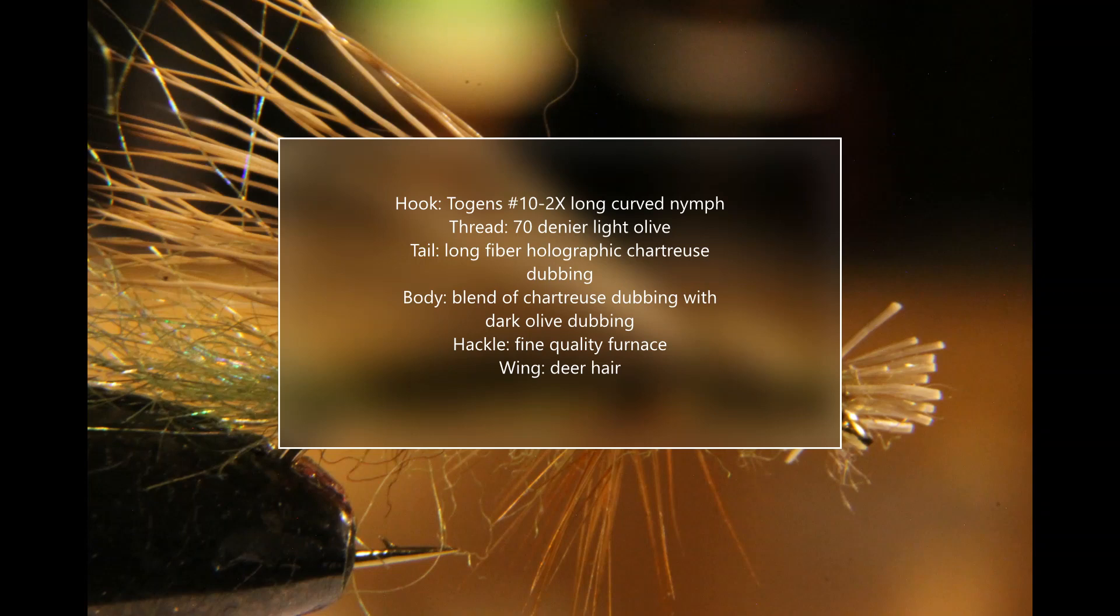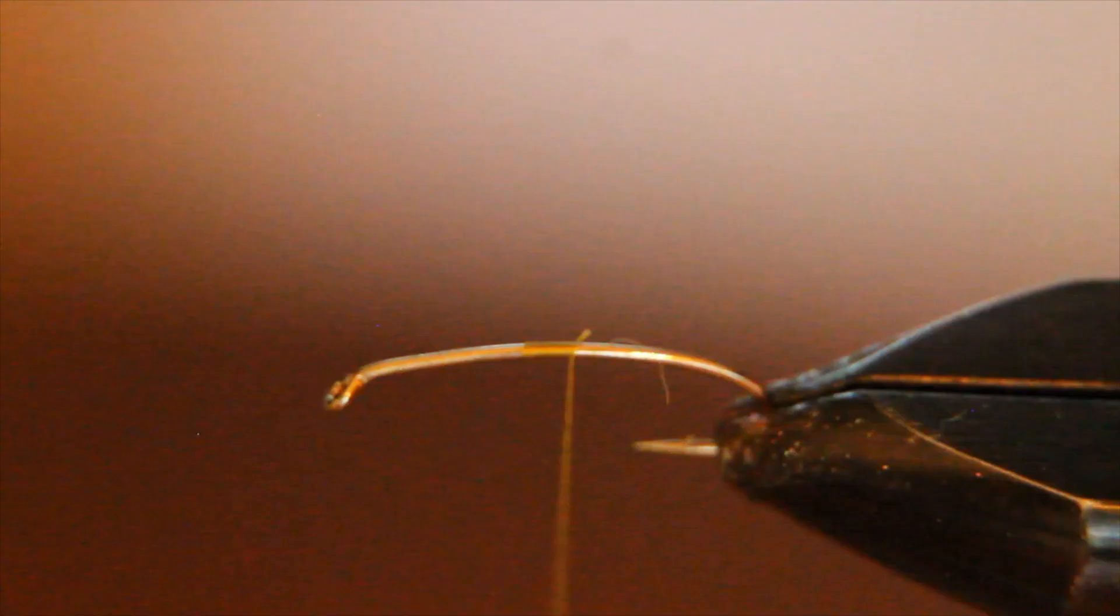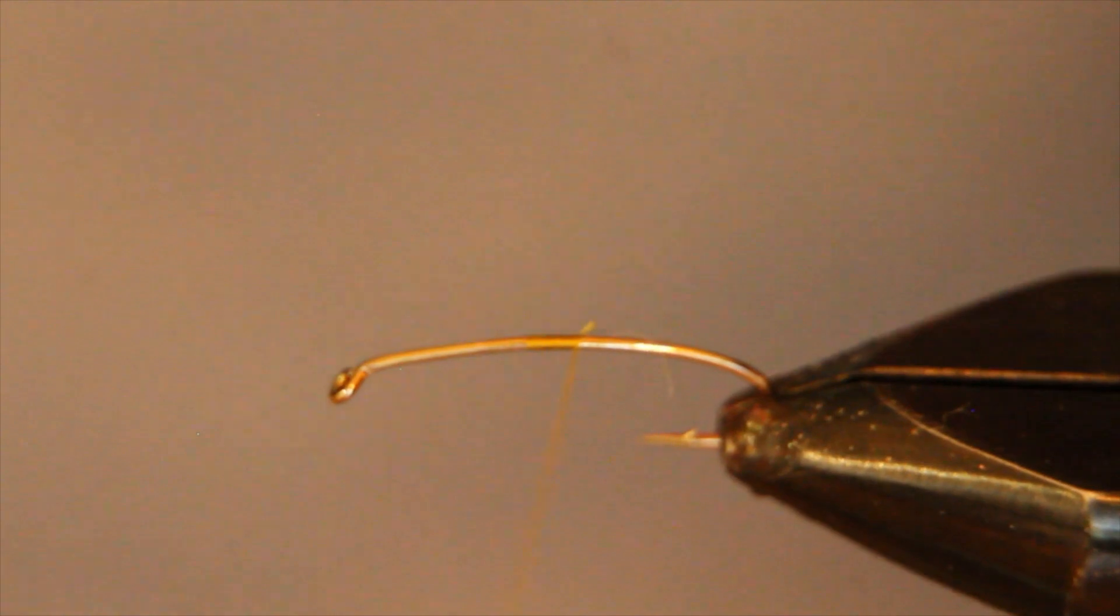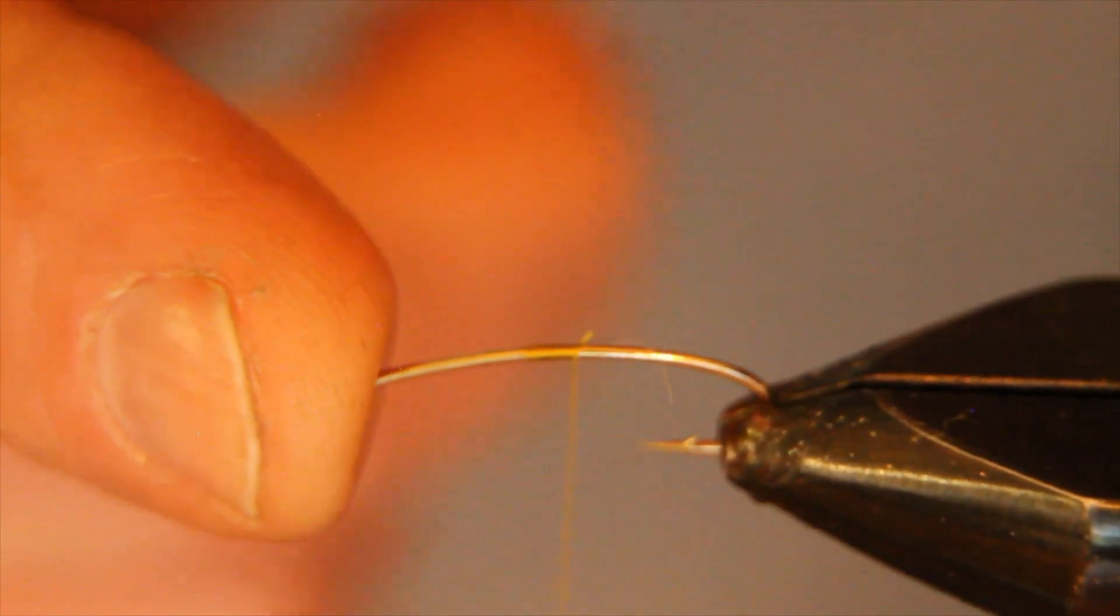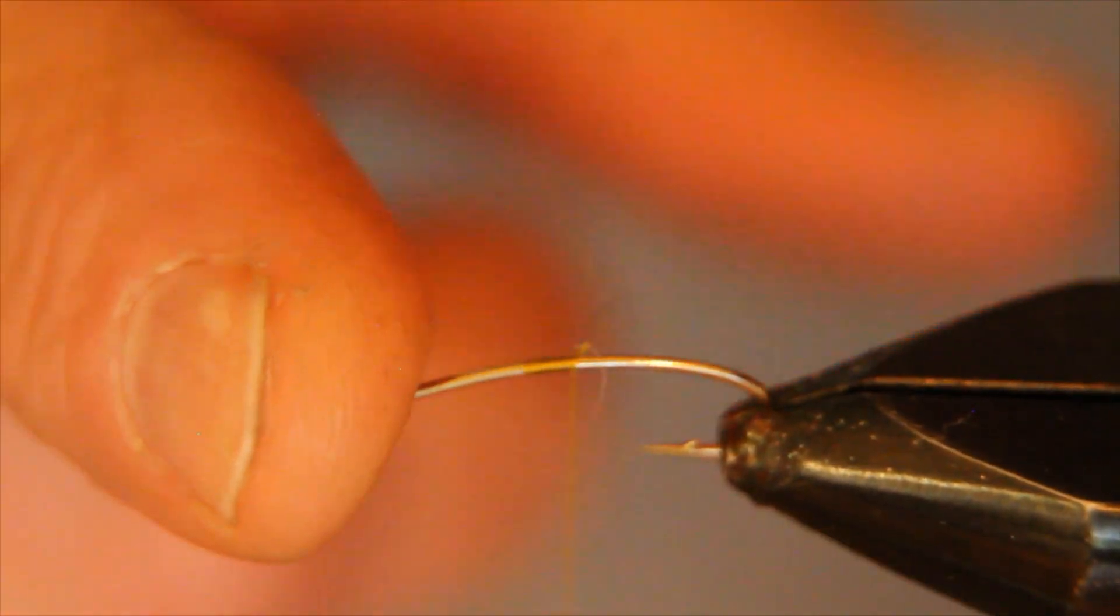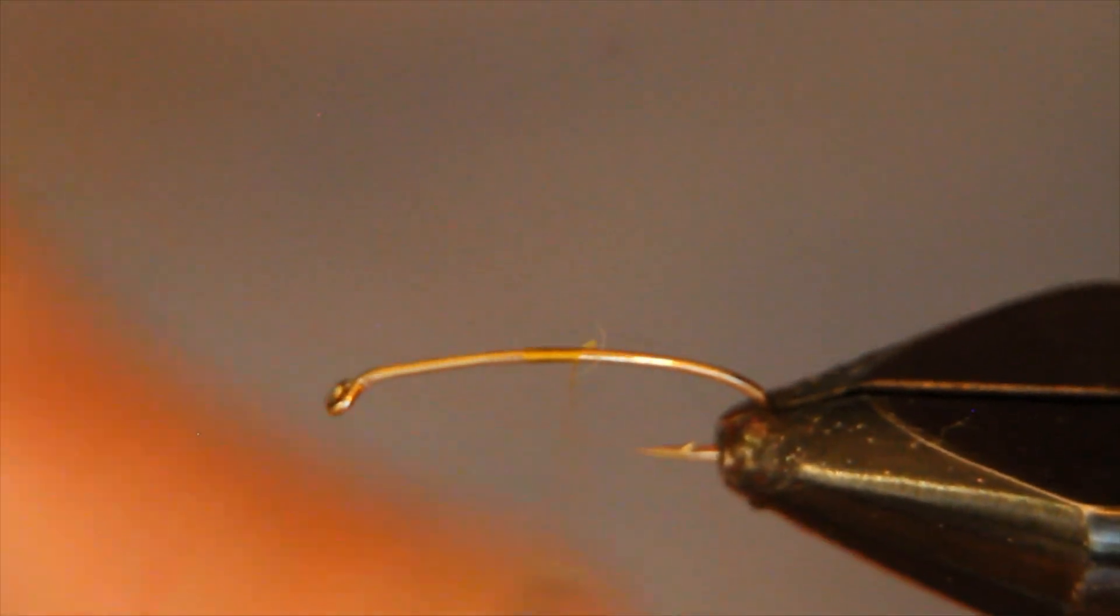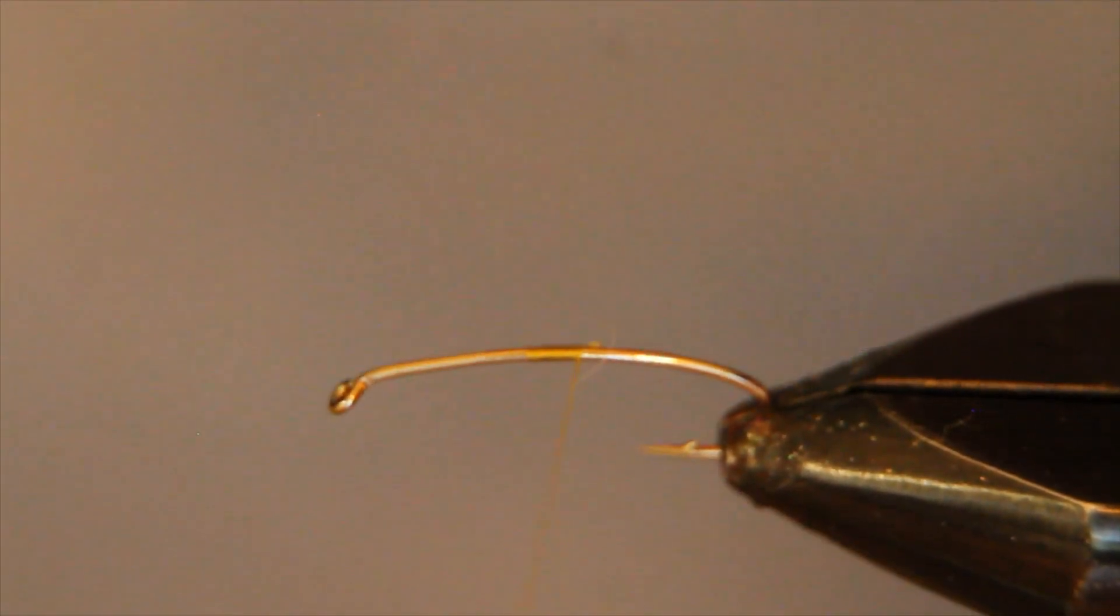If you like this video, please tap that subscribe button on the bottom right of your screen. Thank you. Into my vise I have a Tiemco number 10 2x long curved nymph hook. To that I've attached my 70 denier light olive tying thread right in about mid-shank there.